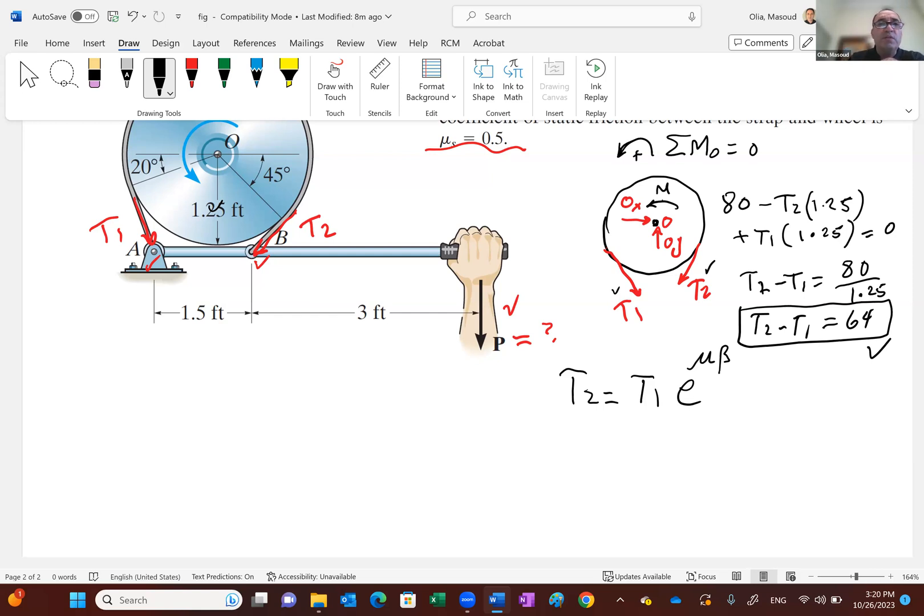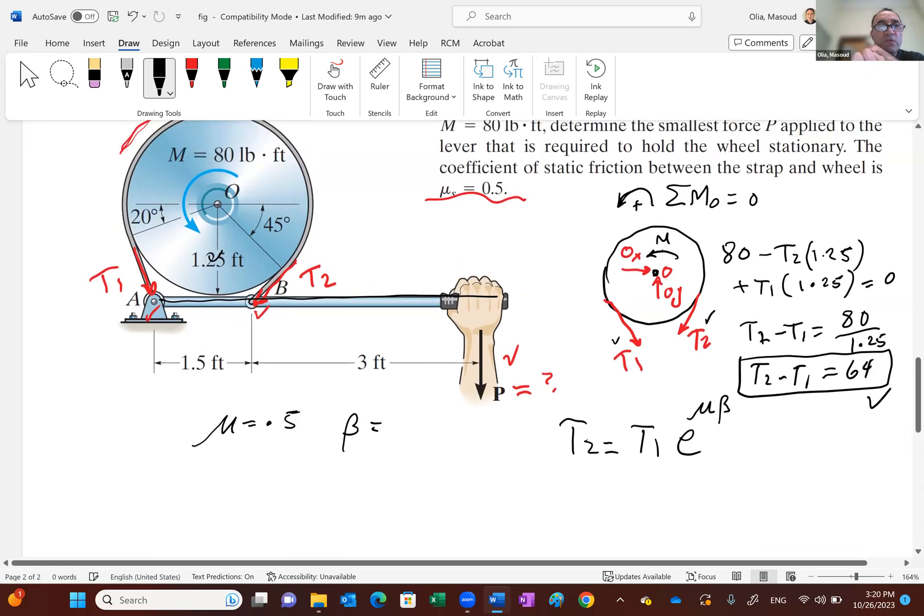So this will give us another relation. And together with this equation, we should be able to find T2 and T1. See, after we find T2 and T1, then we can look at the free body diagram of this lever. But be careful guys. Mu is given to be 0.5. No problem. But beta is the angle of the contact.